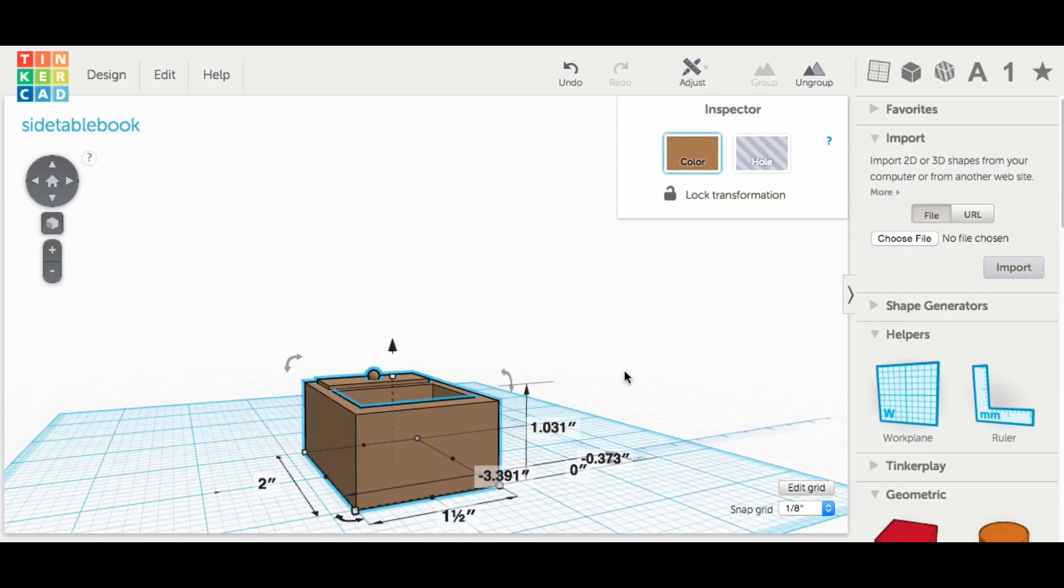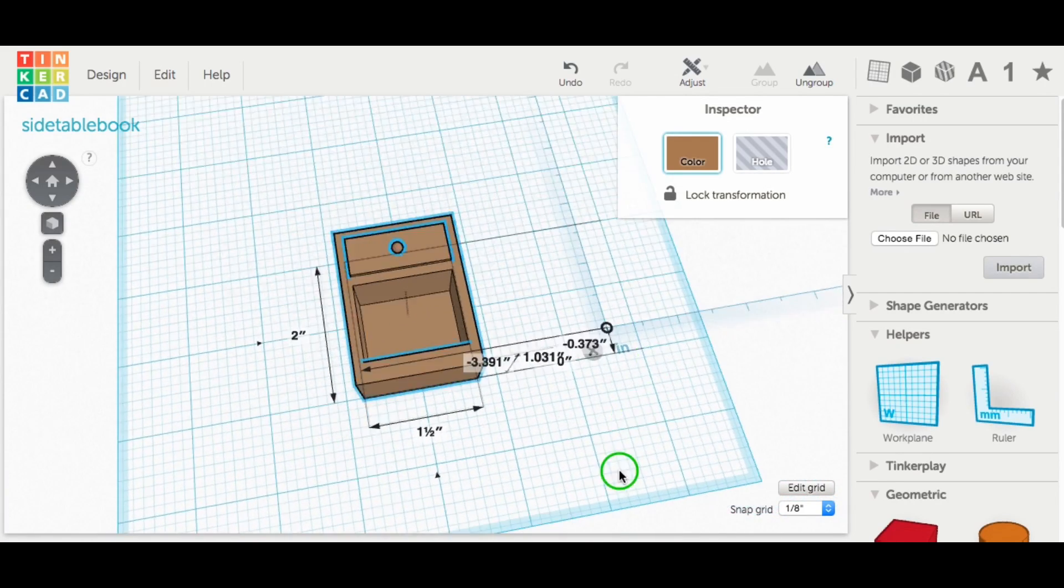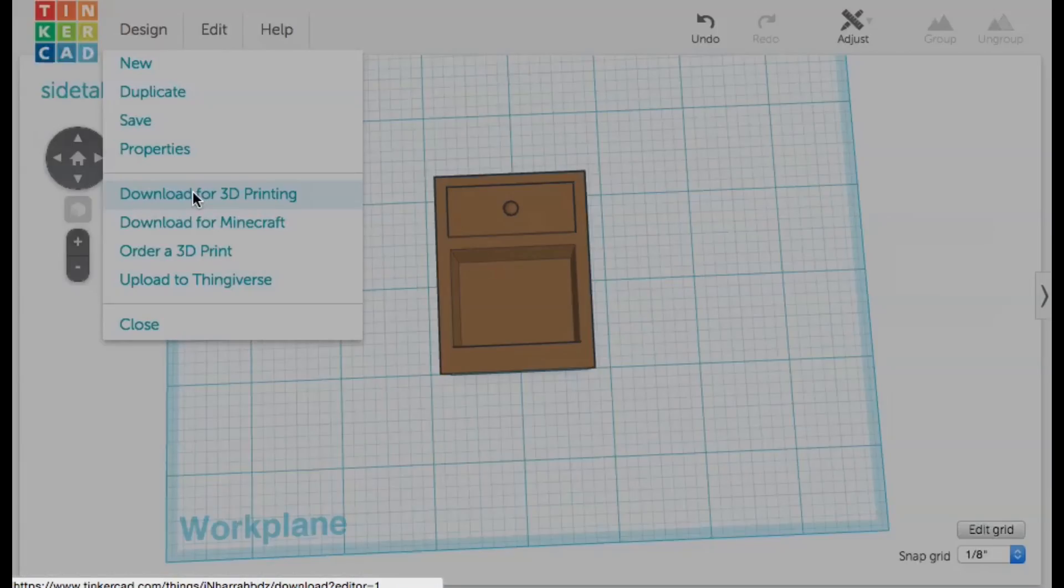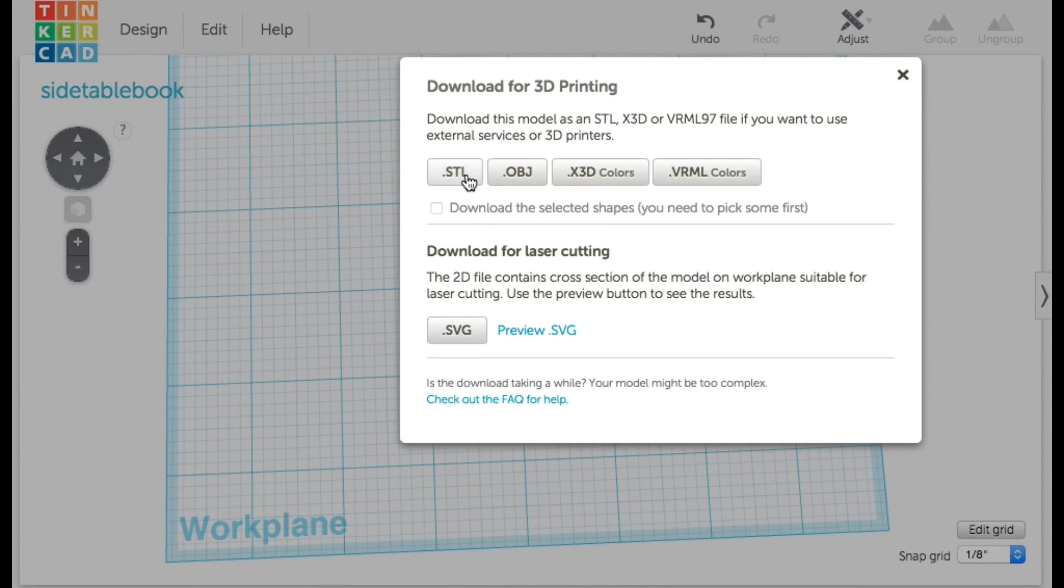So everything looked good, so now we just had to export it as an STL file. So I click on design and then download for 3D printing. Clicked on STL and we had the file.